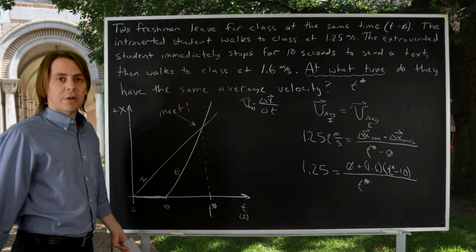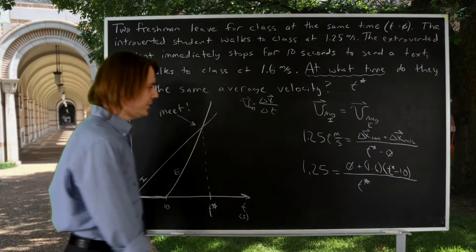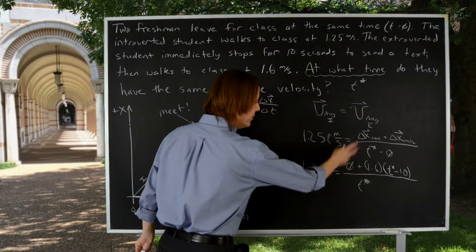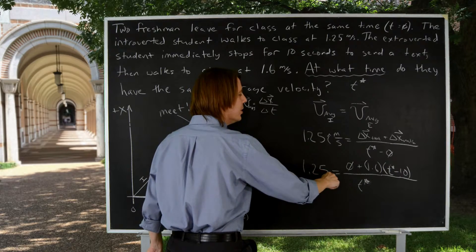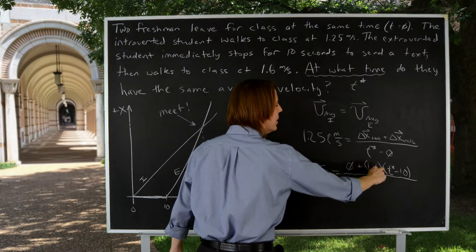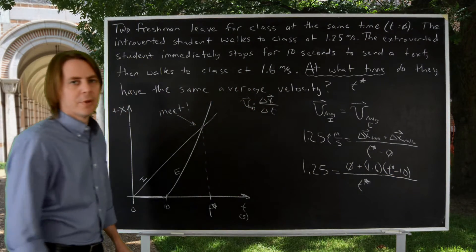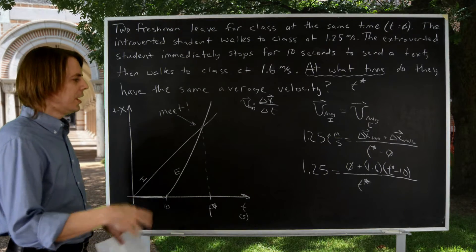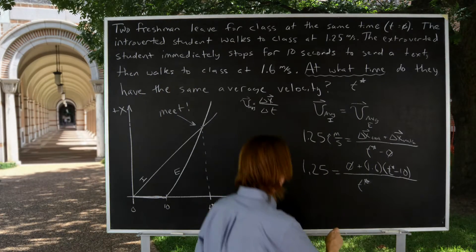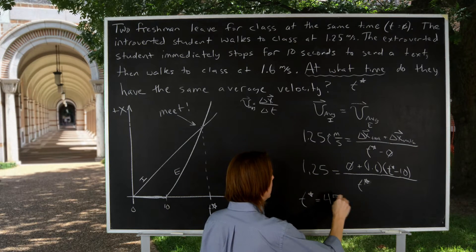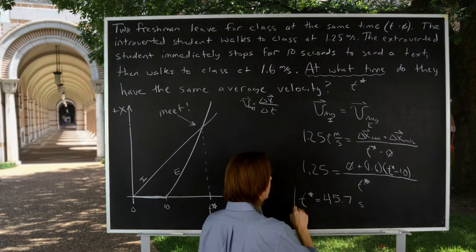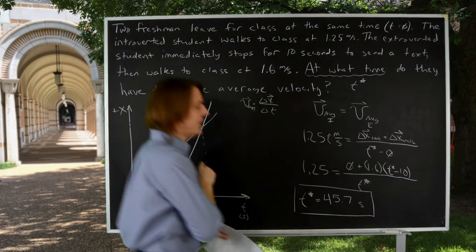And now you can see we have it all down to T star. That's why we used that notation. So, all we got to do, that zero goes away, this T star comes up here, you got 1.25 T star equals 1.6 T star minus 16. So then you solve for T star, and you get that T star is 45.7 seconds. So you can check your math, and that's the answer.